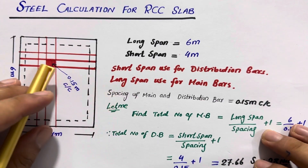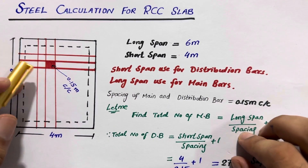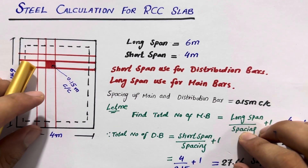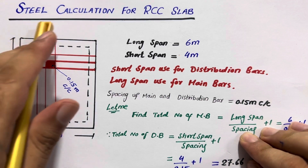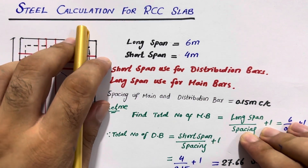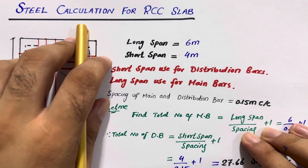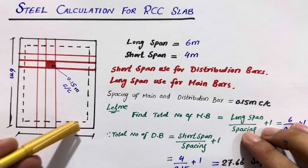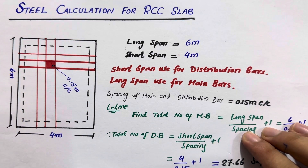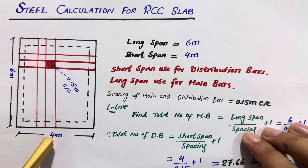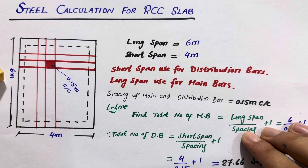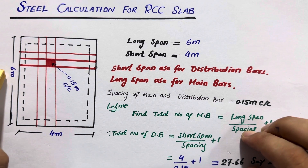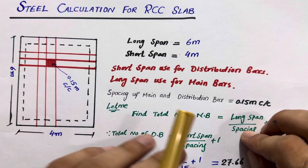Welcome back to Several Engineers YouTube channel. In this short video lecture, I would like to guide you for steel calculation about RCC slab. You can see this is a diagram for an RCC slab which size is six meter by four meter — the width is four meter and length is six meter.